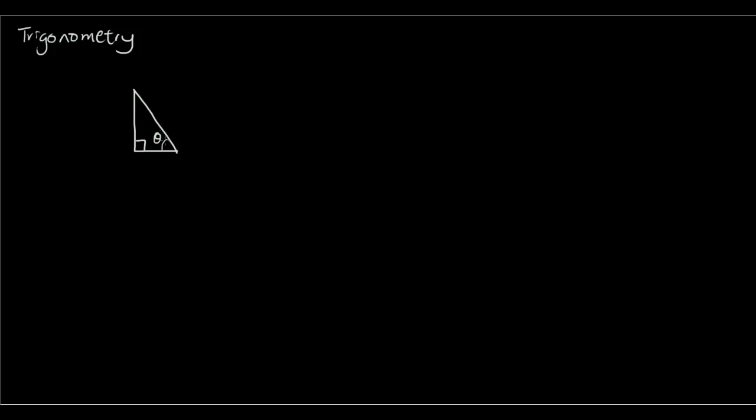Now, according to this angle, we can now give names to every side in this right angle triangle. So we're going to name the opposite side, the side that is opposite to our θ as the opposite side.